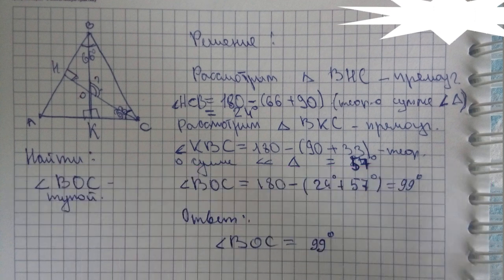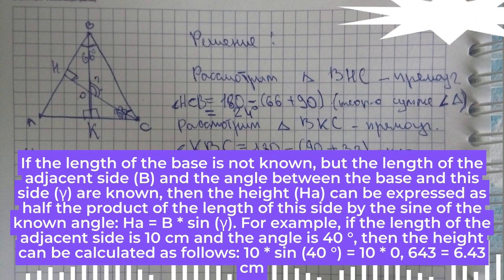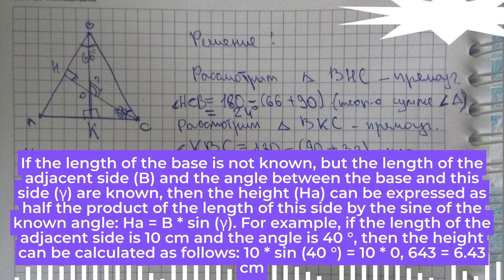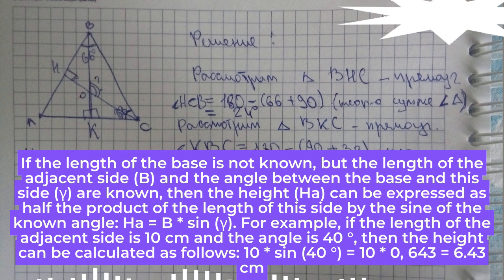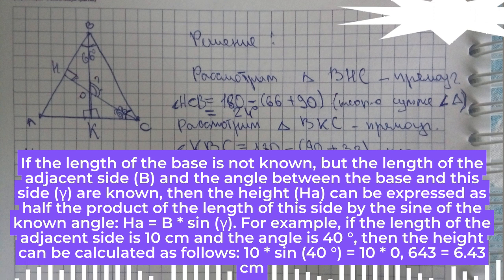Step 2. If the length of the base is not known, but the length of the adjacent side, b, and the angle between the base and this side, gamma, are known, then the height ha can be expressed as the product of the length of this side by the sine of the known angle: ha = b * sin(gamma). For example, if the length of the adjacent side is 10 centimeters and the angle is 40 degrees, then the height can be calculated as follows: 10 * sin(40°) = 10 * 0.643 = 6.43 cm.